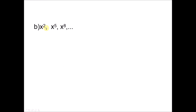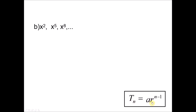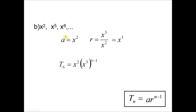For the next question with terms x², x⁵, x⁸: a = x², r = x⁵ ÷ x² = x³. Substituting into the formula: t6 = x² × (x³)^(6−1). Simplifying: (6−1) × 3 = 15, and adding the power from a gives 2 + 15 = 17. So t6 = x^17.